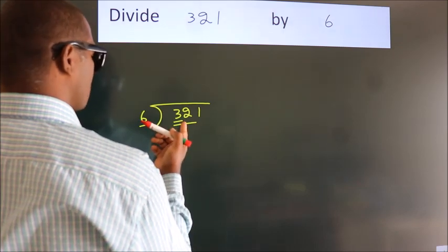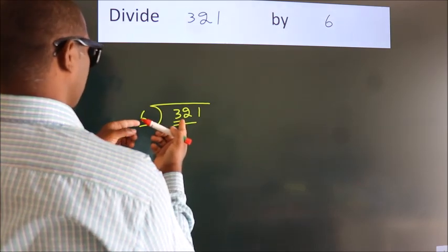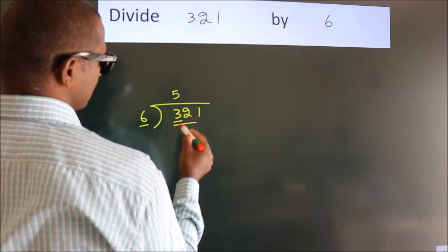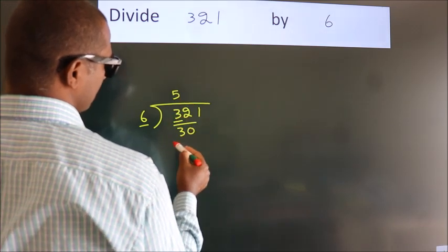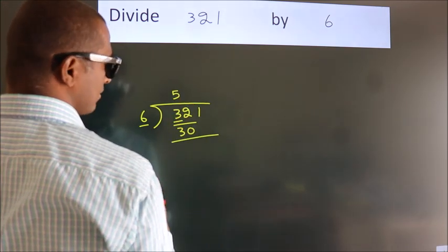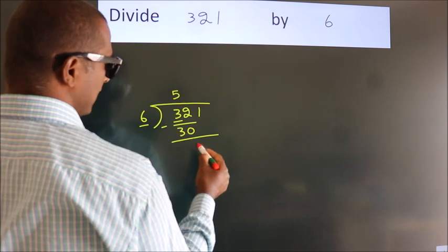A number close to 32 in the 6 table is 6 fives, 30. Now we should subtract. We get 2.